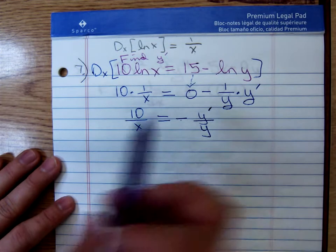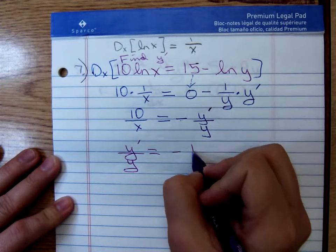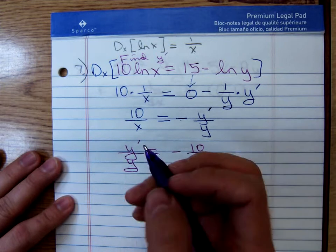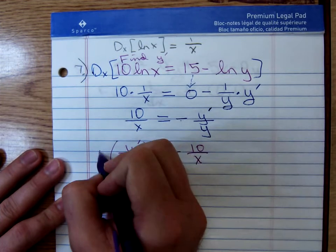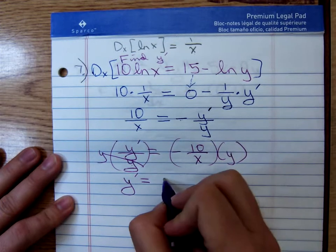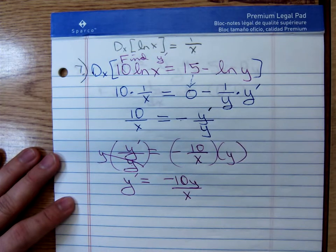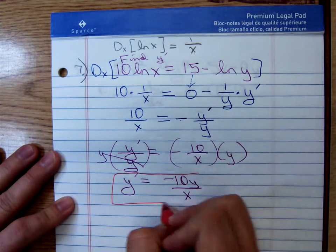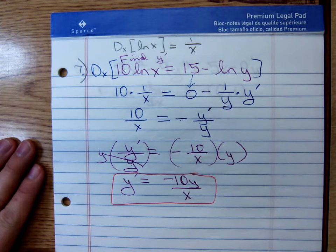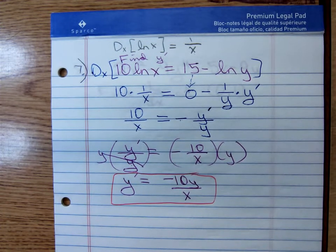That would give me, that negative's going to become a positive y' prime over y, and that's going to become a negative 10 over x. Now, I need to get rid of that y in the denominator. We know what to do to get rid of a y in the denominator. Multiply both sides by y. To give y' prime equals, that'll be a negative 10y all divided by x for my final answer. And any questions there, take a moment and look at that. Make sure you follow what I was doing.